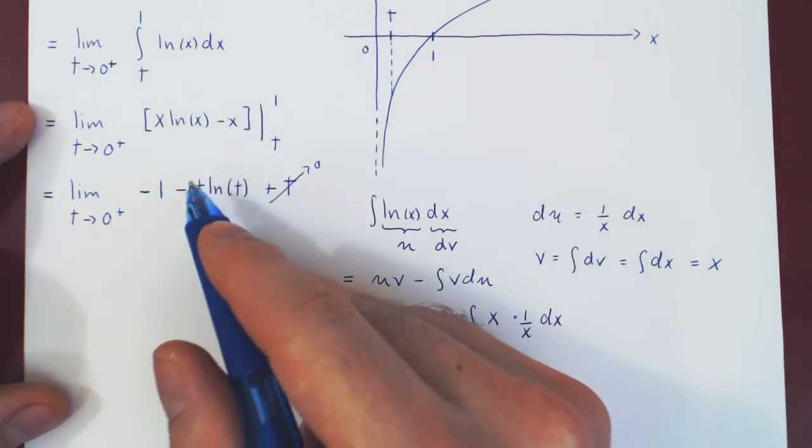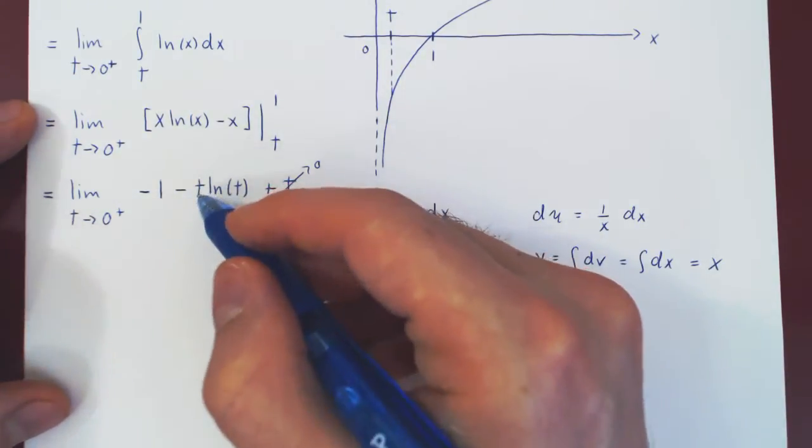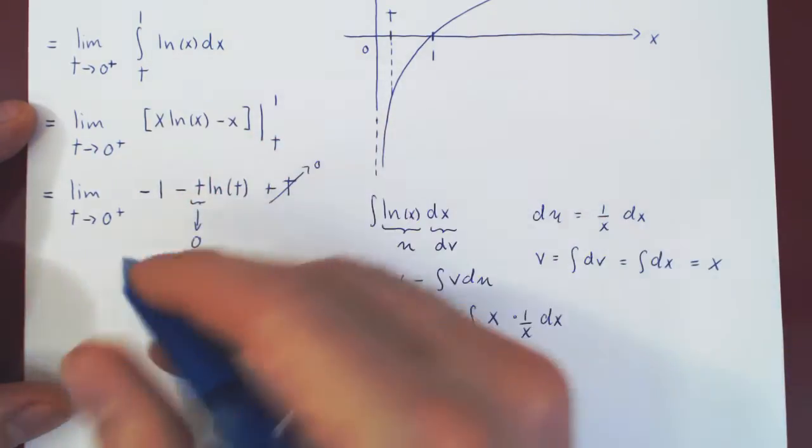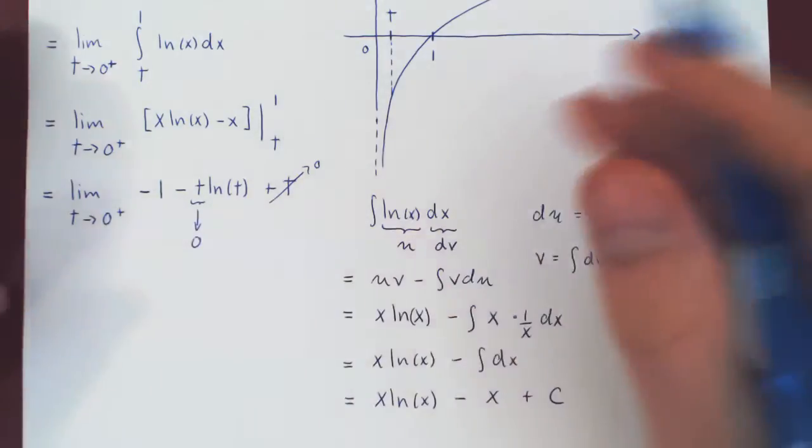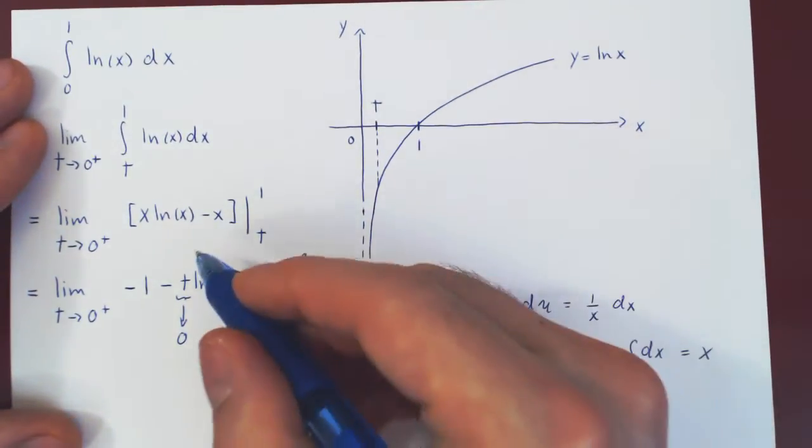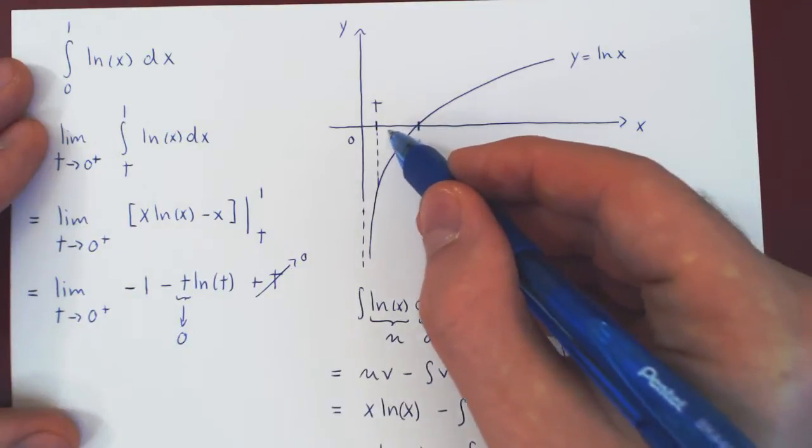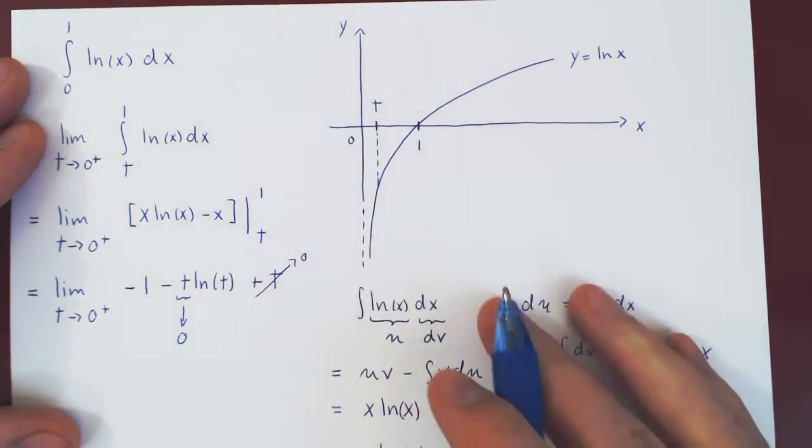But we have to be careful with the t ln of t here. It is true that t approaches 0, of course, as t approaches 0, but if you look at the ln function, as the argument approaches 0 from the right, ln approaches negative infinity.